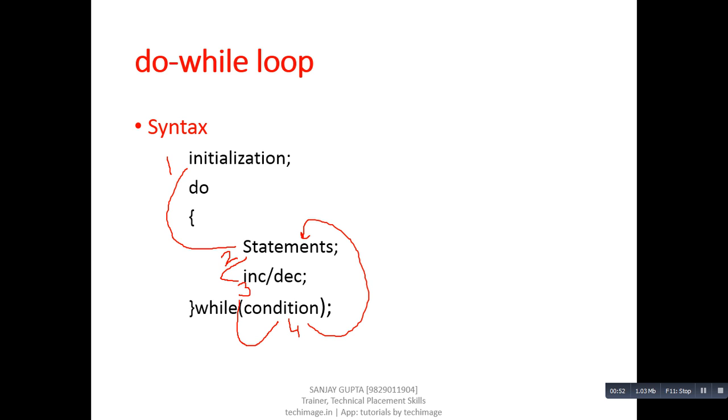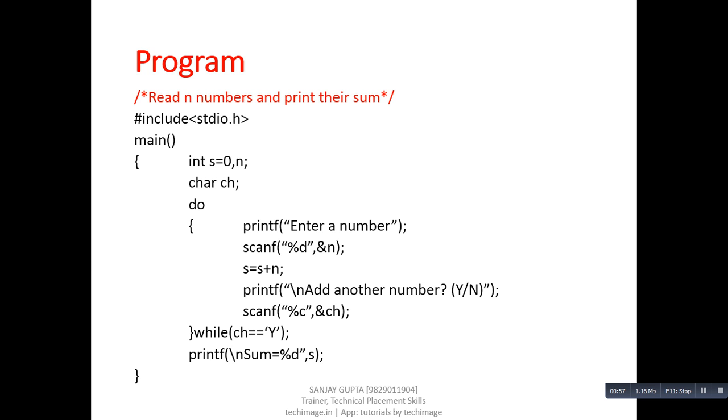We can understand the execution of do-while loop with this example. In this example, we are going to read n numbers from the user and after completion of loop, the program will print sum of all the numbers. So you can see this block. It contains do-while loop, and inside do-while loop there are certain set of instructions.